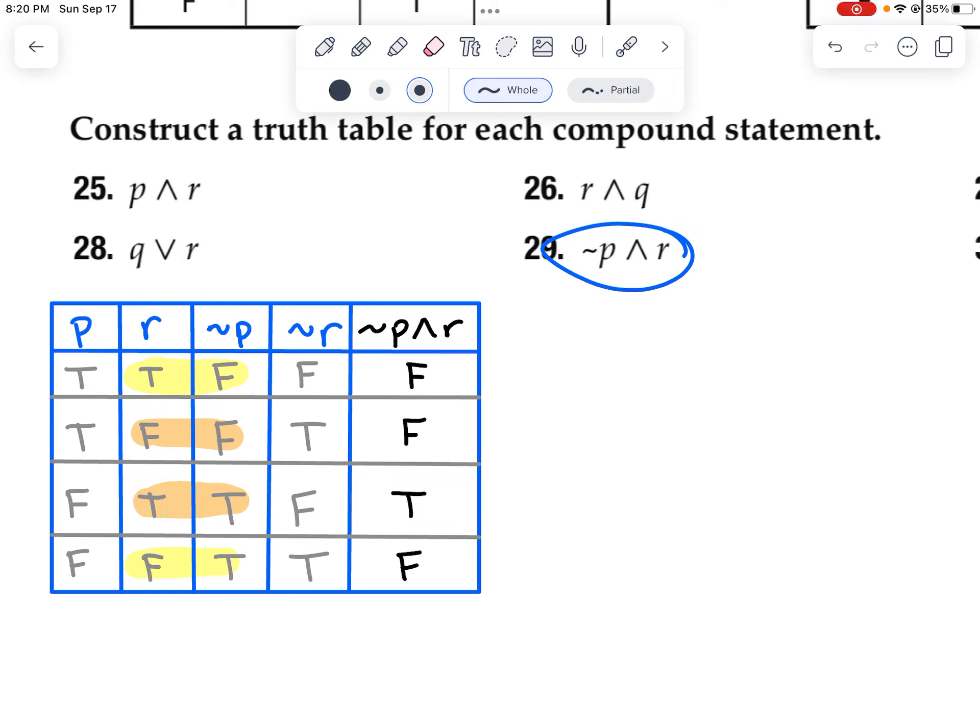So anytime you're setting up a truth table, what you want to note is, the only thing that's going to be different are the letters that are up here. You can change these letters out. And whatever the question is asking. But no matter what, you're still going to set up, like, I could set up this truth table.